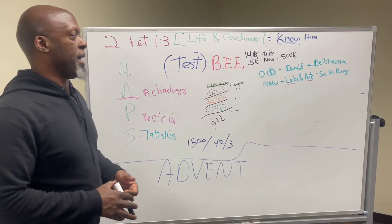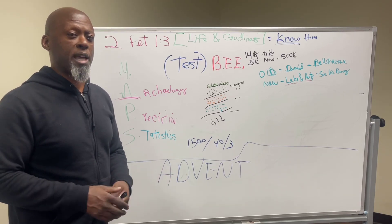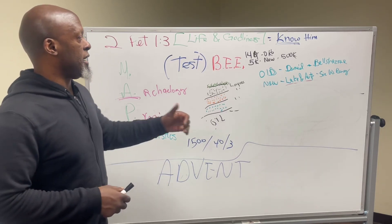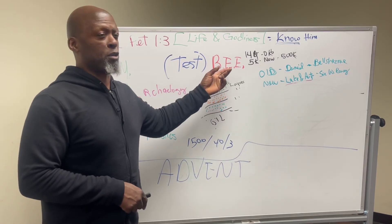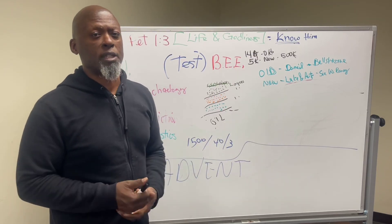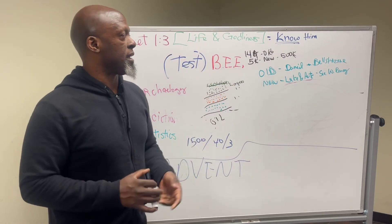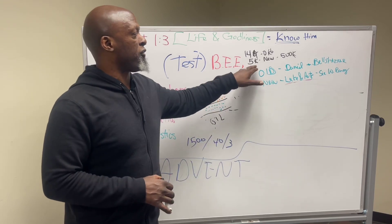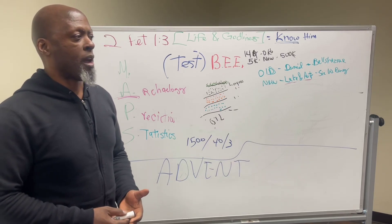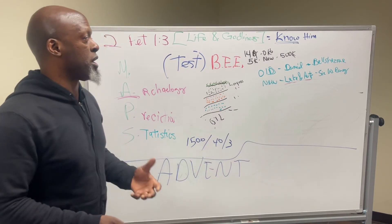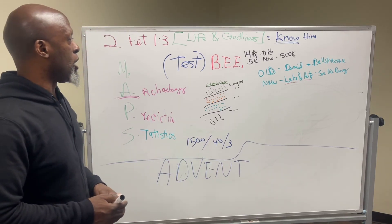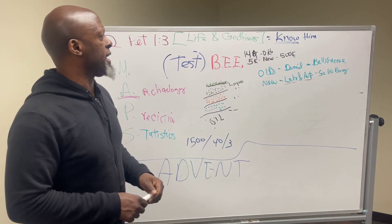The M stands for manuscript evidence — basically how the manuscripts were tested over time. Some things we came away with include the bibliographic test, eyewitness test, and external test. There are over 14,000 copies of Old Testament manuscripts and over 5,000 for the New Testament — over 500,000 pages of manuscripts, some predating Christ's birth by several centuries.